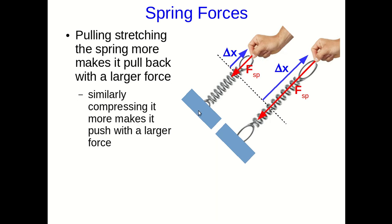And similarly, if you compress it, you get the same thing. The amount you compress it affects how large the spring force is. And so we say that the spring force is proportional to the displacement. And there's this constant, which is a property of the individual spring, which gets called the spring constant.